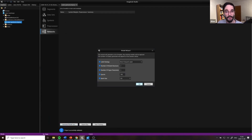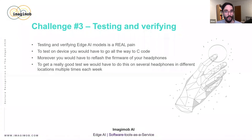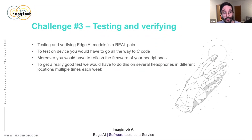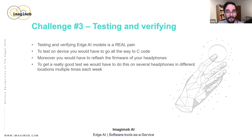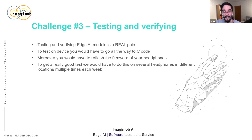A bigger challenge is what comes next: once we have built our first set of models, we need to test and verify them. Testing and verifying Edge AI models is a real pain. To test on a device, you would have to go all the way to C code, and then re-flash the firmware of every single headphone we sent out across Sweden for data collection. Then you'd have to perform gestures over and over again in real time, and to get a good feedback loop, you'd have to do this several times each week. It's just not feasible to do it this way.